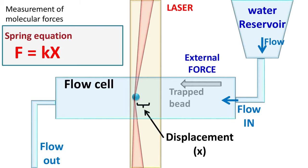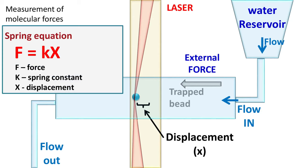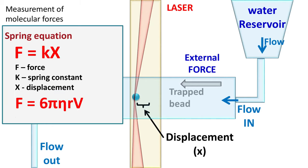Now, according to spring equation, which is F = KX, F is the external force, K is the spring constant of the optical trap and X is the displacement. Because this external force is applied using a flow cell, this force is actually the force due to viscosity, which is 6πηRv.